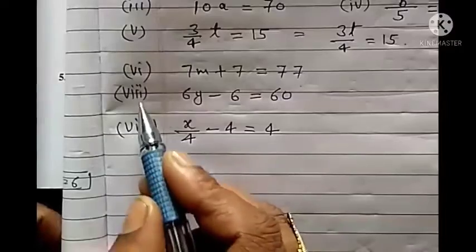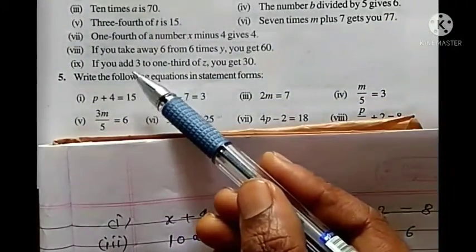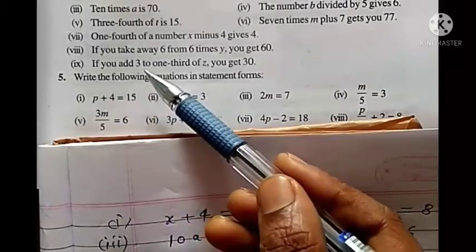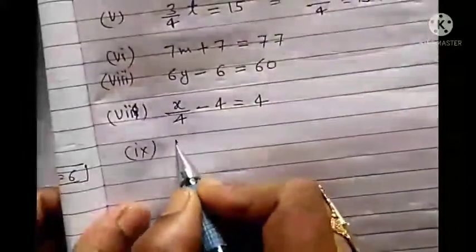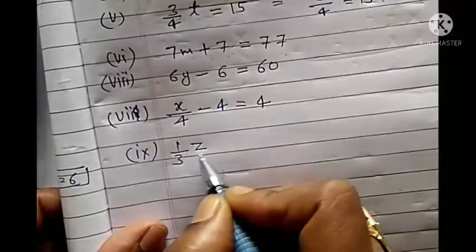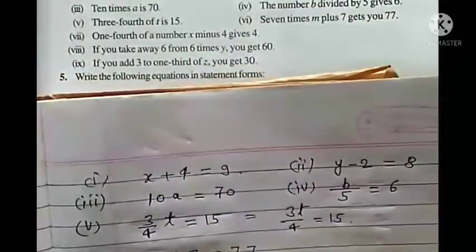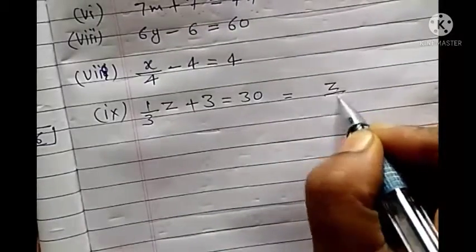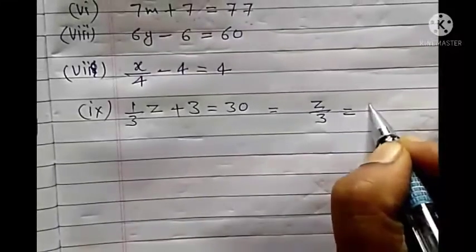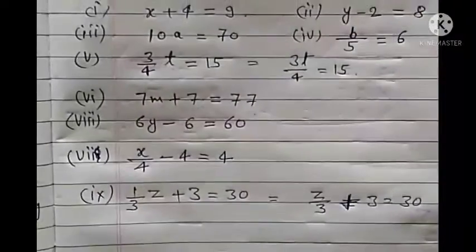Ninth: if you add 3 to 1 third of z, you get 30. So 1 third of z is z upon 3. Adding 3 to it: z upon 3 plus 3 equals to 30. That is how you form the equation.